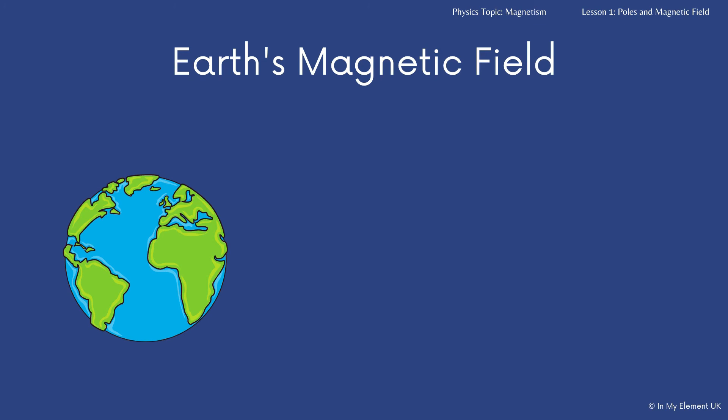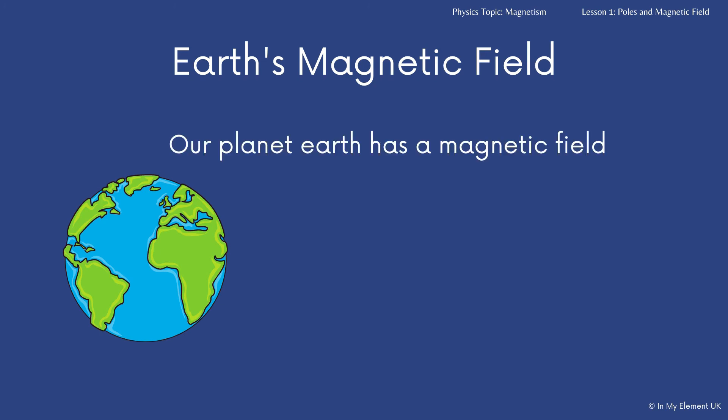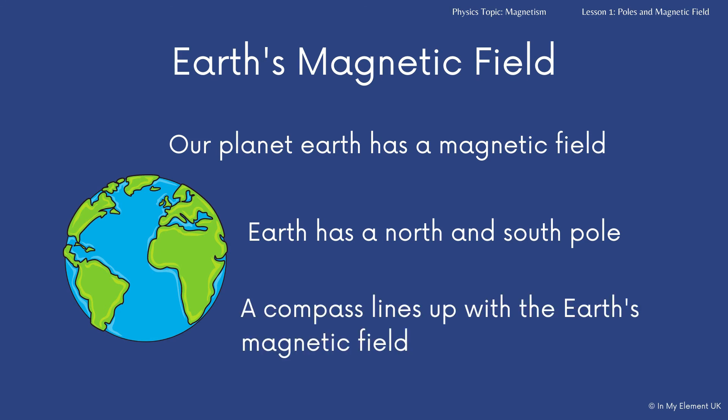Finally, it's really important that you know that our planet Earth has a magnetic field, because our planet has a north and a south pole. A compass lines up with the Earth's magnetic field, and that is how you can work out which direction you are walking in with a compass. It's really important that you remember that the Earth has a magnetic field, as well as magnets having a magnetic field.